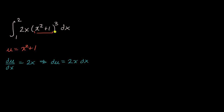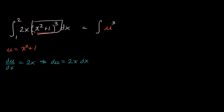So at least this part of the integral I can rewrite. We have u to the third power — that's x squared plus one to the third — and then two x times dx, which is du. So we can write the integral as u to the third power du, and we need to think about the bounds in a second.